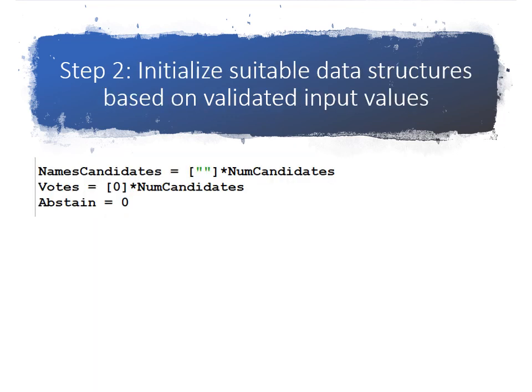Once we've input them, we can move to step two. Step two is where we're going to initialize some data structures based on how many candidates are joining. So we're going to use a one-dimensional array called names candidate and it's equal to the empty string multiplied by the number of candidates. And we're also going to have votes. It's another one-dimensional array to hold how many votes for each candidate. So votes is equal to zero times the number of candidates. And abstain is a variable that's going to hold how many students have abstained from voting.